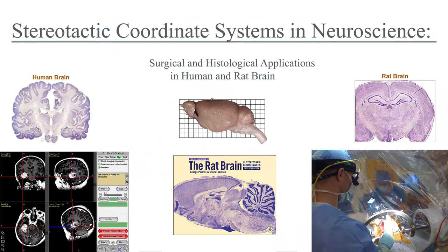That's a pretty good summary of stereotactic coordinates in the neurosciences. The assignment due is to continue these problem sets using the rat atlas. If you have any questions along the way, feel free to email me. Thank you very much.